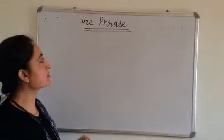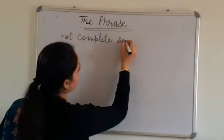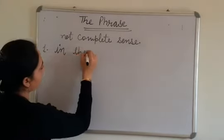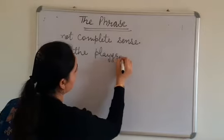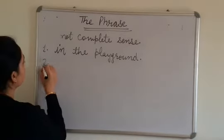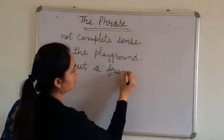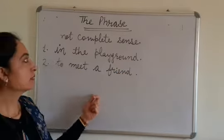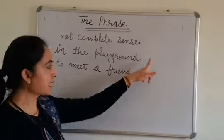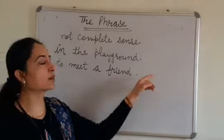Some groups of words make sense but not complete sense. That is called a phrase. For example, number one: in the playground. Number two: to meet a friend. These are called phrases — groups of words that make sense but not complete sense.